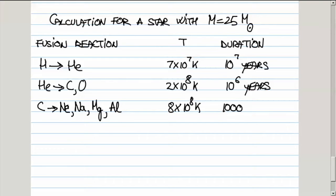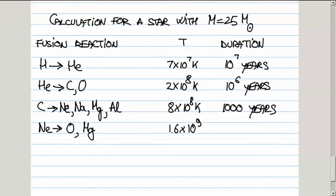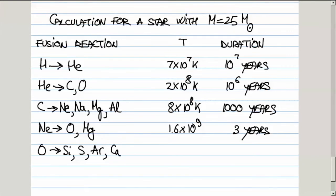Carbon burning will last only 1,000 years. Then neon gets fused, synthesizing oxygen and magnesium. The temperature is 1.6 times 10 to the 9th Kelvin. This will last only three years. Then we have fusion of oxygen into silicon — that makes the sand on the beach and your computer chips — as well as sulfur, argon, and calcium, good for the bones. The temperature is 1.8 times 10 to the 9th Kelvin. This is how all the elements in the universe are created. This will last only 0.3 years, roughly four months.